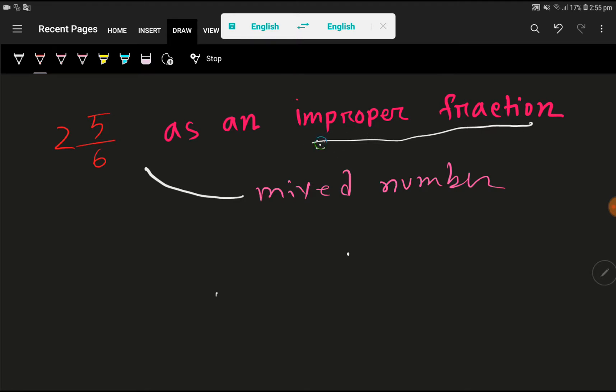Improper fraction means that fraction in which numerator is greater than denominator. And every mixed number has two parts: the whole number part, here 2, and fractional part, 5 over 6.